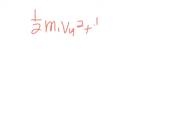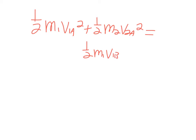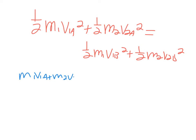Because kinetic energy is conserved, we know that (1/2)M1·V1A² + (1/2)M2·V2A² = (1/2)M1·V1B² + (1/2)M2·V2B². The total kinetic energy of the system before equals the total kinetic energy after. We also know from conservation of momentum that M1·V1A + M2·V2A = M1·V1B + M2·V2B.